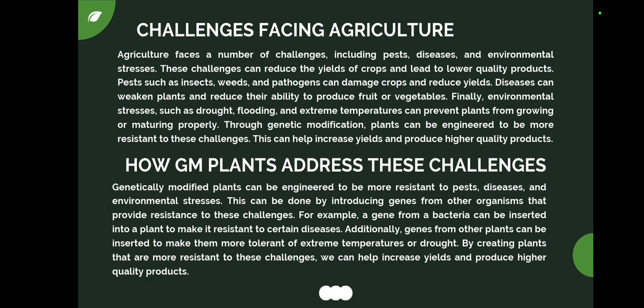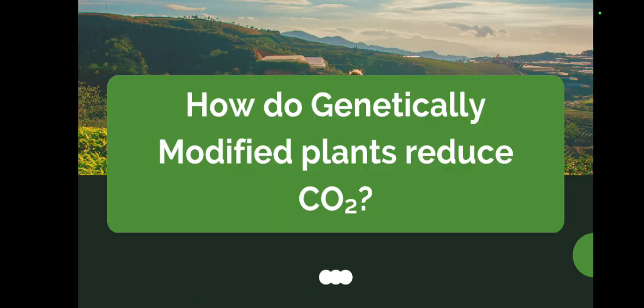Genetically modified plants can be engineered to be more resistant to pests, disease, and environmental stresses. This can be done by introducing genes from other organisms. For example, a gene from bacteria can be inserted into a plant to make it resistant to certain diseases. Additionally, genes from other plants can be inserted to make them more tolerant of extreme temperature or drought. By creating plants that are more resistant to these challenges, we can help increase yields and produce higher quality products.